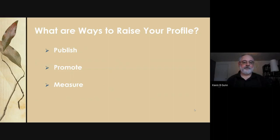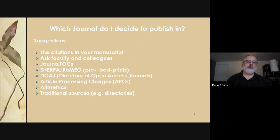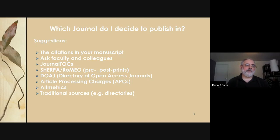If something's behind a paywall, fewer people will be able to get access — or they'll have to take extra steps — so that has to be factored into how you promote your research. The big question is: how do I get started and where should I publish? The most common approach is to look at the citations in your manuscript — what journals kept popping up that you could consult?